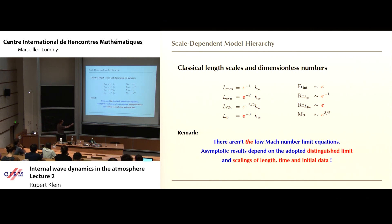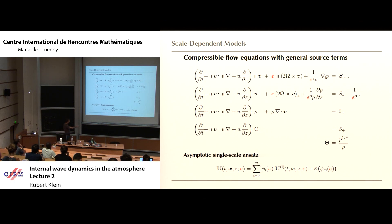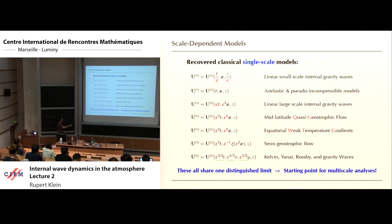So there aren't unique low Mach number limit equations. The asymptotic results depend on the distinguished limit, which we have now fixed, and then on the scalings of length and time and also of the initial data. The compressible flow equations are non-dimensionalized, epsilon appears, we do asymptotics first in single scales, keeping one time, one horizontal, one vertical coordinate. And that gets us to this hierarchy of model equations that you find in the textbooks. That basically summarizes what we heard yesterday.